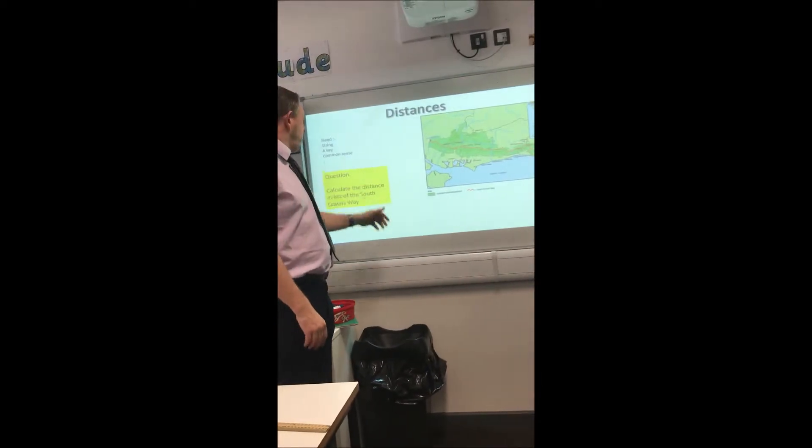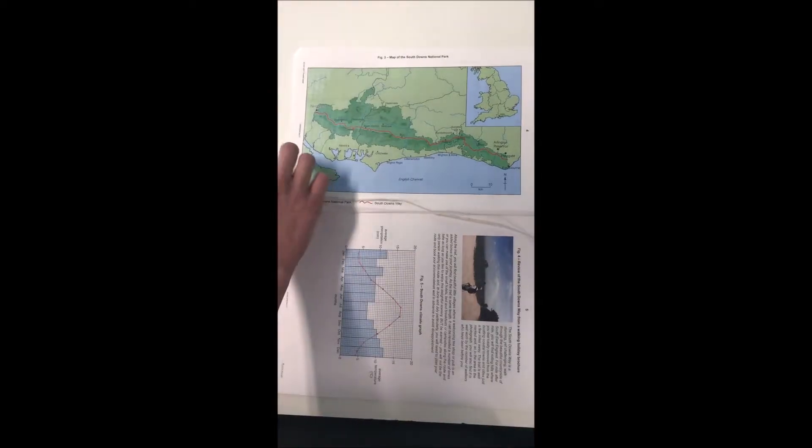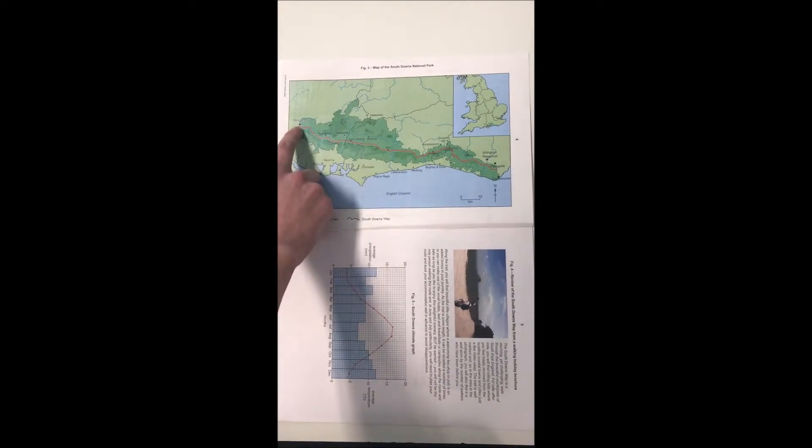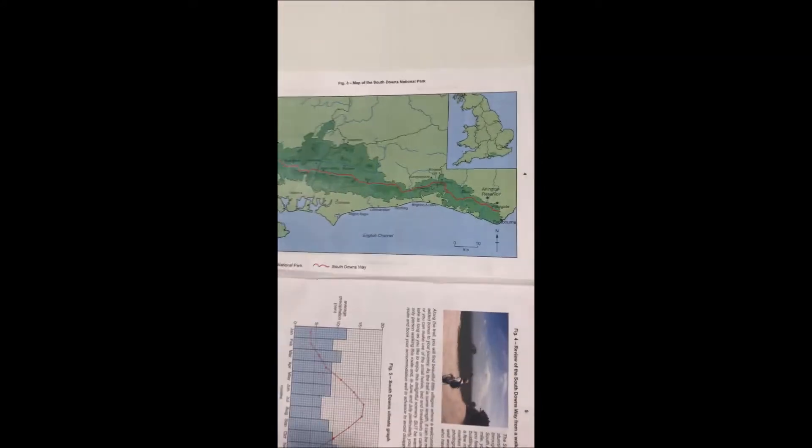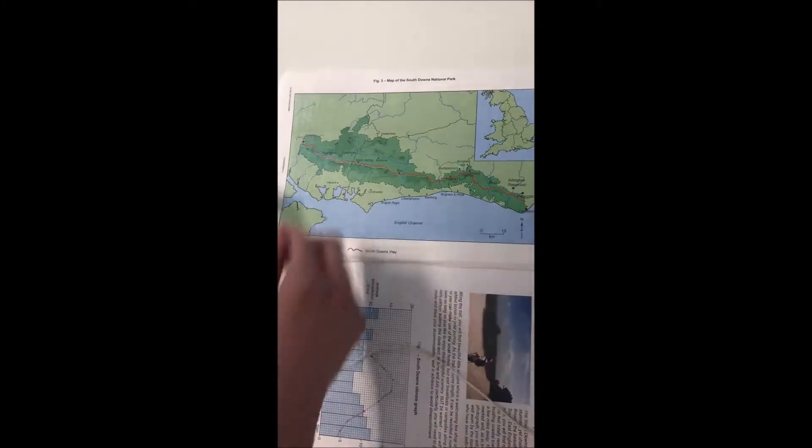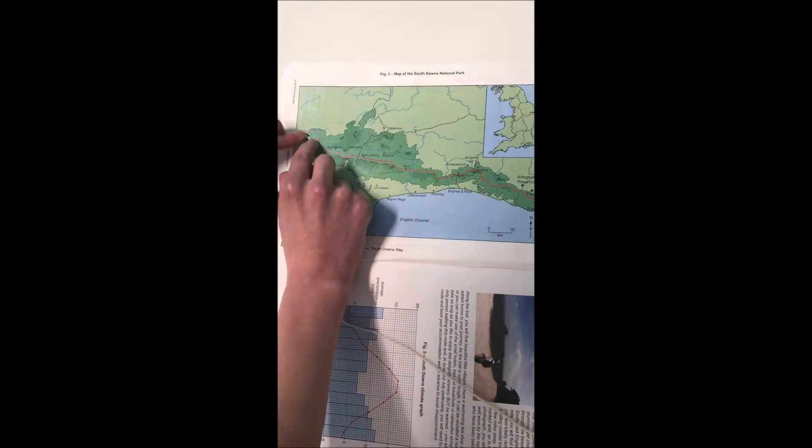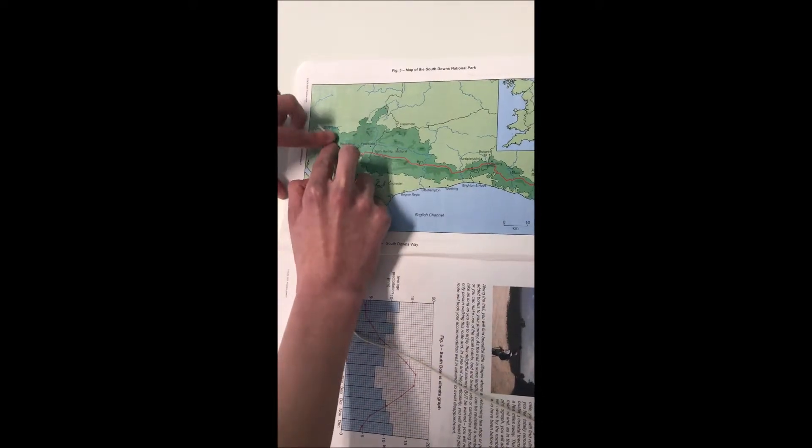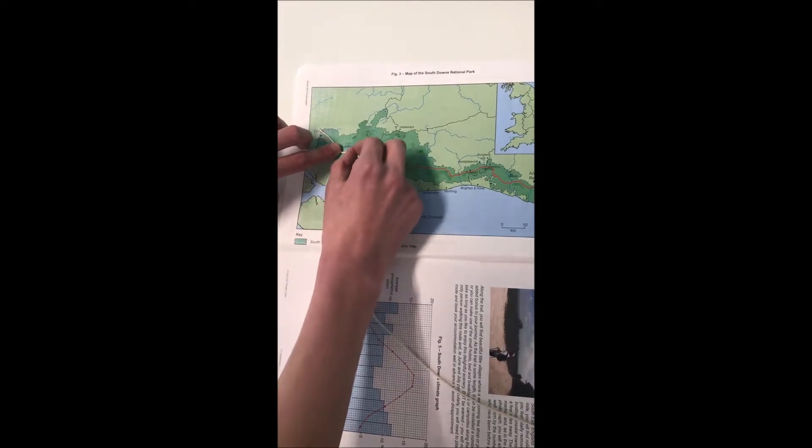Now we're going to use this question and we're going to measure it from Winchester roughly to in between Polgain and Eastbourne here. I'm using this piece of string right here. As you're going along, every little corner you want to try and move the string to fit the curvature of the path. I'm going to go here nice and slowly, keep going across, make sure I don't lose track of where I am.